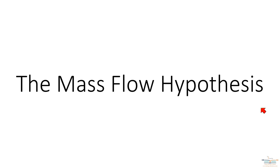In this video we're going to look at how substances like sucrose and amino acids move through the phloem vessel. The movement is called translocation and the hypothesis that tries to explain how the movement occurs is called the mass flow hypothesis.